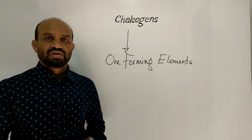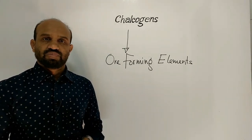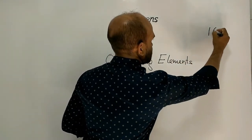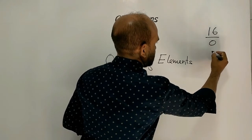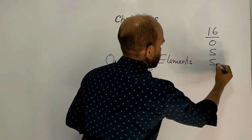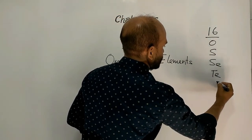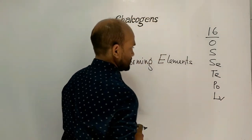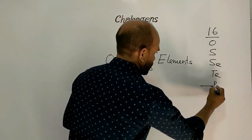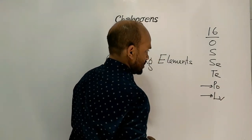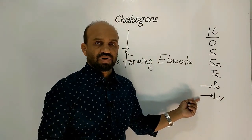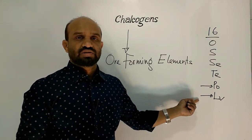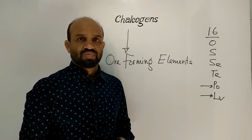Let's write the elements belonging to column 16: Oxygen, Sulfur, Selenium, Tellurium, Polonium, and Livermorium. Polonium and Livermorium are radioactive elements, and that is why these two elements are kept out of consideration.